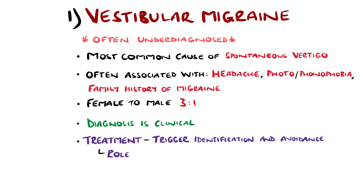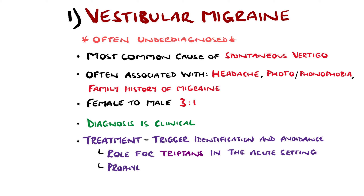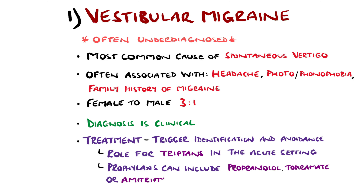Typical migraine treatment such as triptans in the acute setting has shown some benefit, and prophylaxis can feature agents like propranolol, topiramate or amitriptyline.